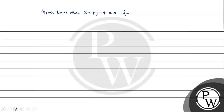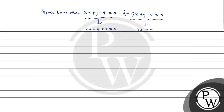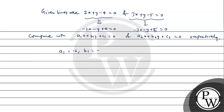Our lines are 2x + y - 4 = 0 and 3x + y - 5 = 0. Now we compare with a1x + b1y + c1 = 0 and a2x + b2y + c2 = 0 respectively. After rewriting with all terms positive: a1 = -2, b1 = -1, c1 = 4, a2 = -3, b2 = -1, c2 = 5. Here c1 and c2 are both greater than 0, so both are positive. We need to find the obtuse angle bisector, so first let's find the value of a1a2 + b1b2.